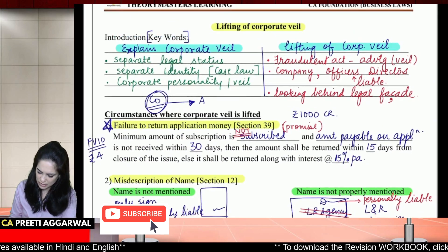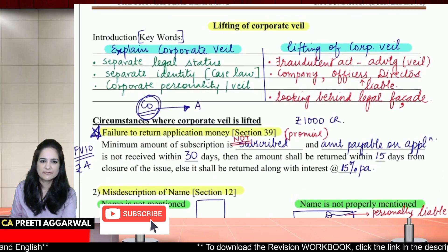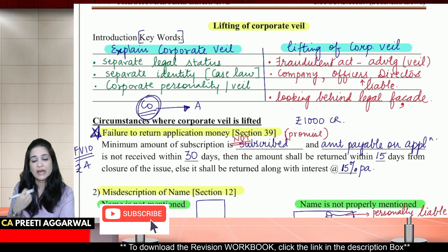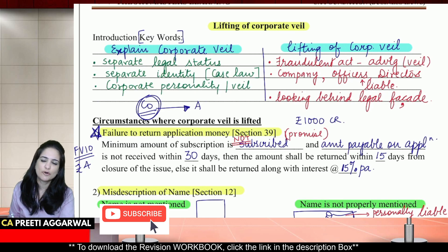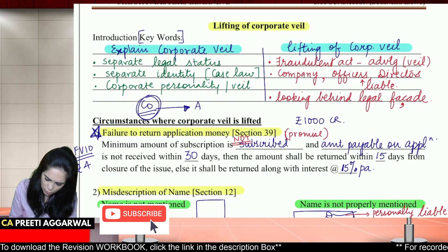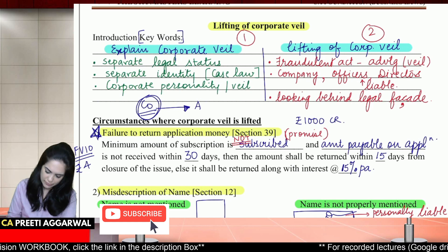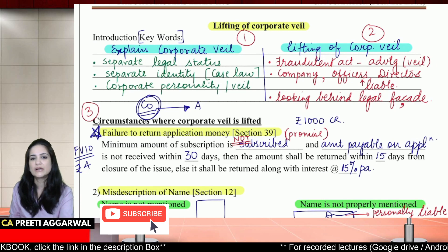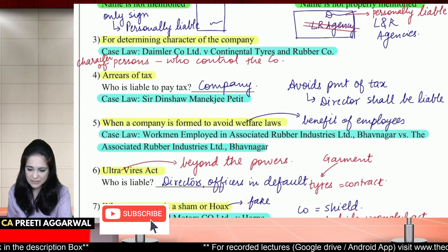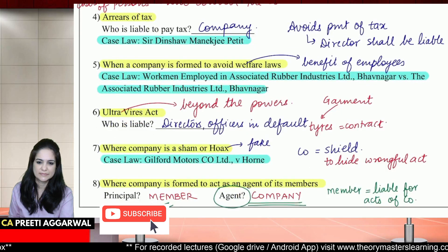These were the circumstances where the corporate veil is lifted. If a question is asked on lifting of corporate veil and circumstances, first explain what is corporate veil, then explain the meaning of lifting, then jump to the circumstances where corporate veil can be lifted and mention all the circumstances. Don't describe it in length — time is very important; just write in brief.